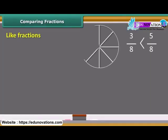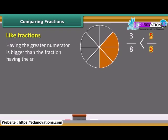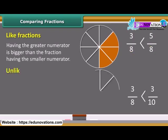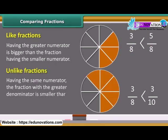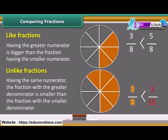In like fractions, the fraction having the greater numerator is bigger than the fraction having the smaller numerator. In the case of unlike fractions having the same numerator, the fraction with the greater denominator is smaller than the fraction with the smaller denominator.